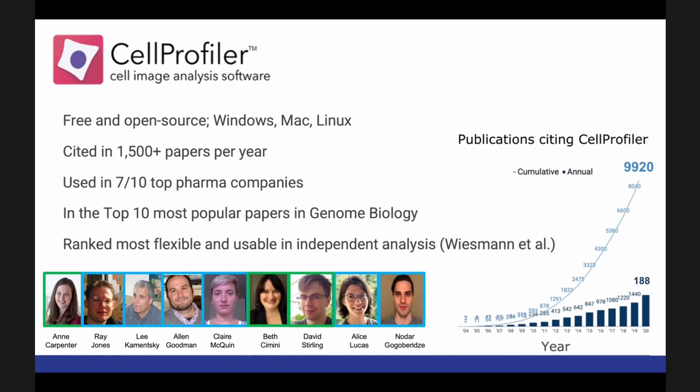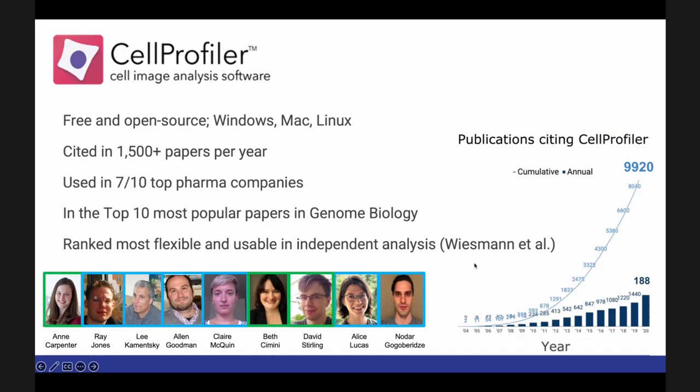CellProfiler doesn't have to be used for biology — we've seen it used in material science research and other areas where you just want to understand what's happening in a picture. But it's primarily used by biologists. CellProfiler and CellProfiler Analyst form two halves of what's needed to understand an image. With CellProfiler, you take an image and turn it into a series of measurements — things about the objects you care about, or about the image as a whole.